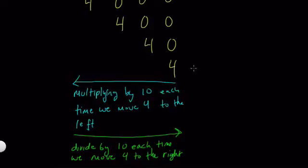And this is all based on our place value system. Think of the way these numbers are named. This is 4 ones, 4 tens, 10 times larger than 4 ones, 4 hundreds, and 4 thousands.